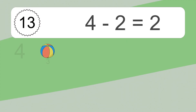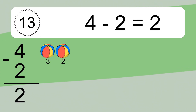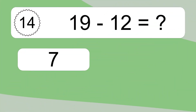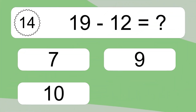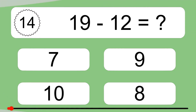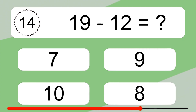4 minus 2 equals what? 4 minus 2 equals 2. Let's count it: 3, 2.